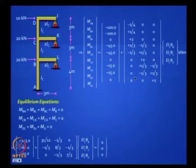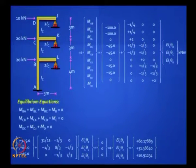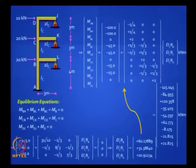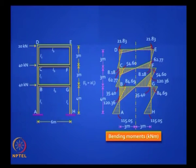You can get the answers, then plug them back into the slope deflection equation. You have got the answers; you can draw the free body diagram and the bending moment diagram. If you want to do this by moment distribution method, go ahead — because you do not have sway, it is not difficult.